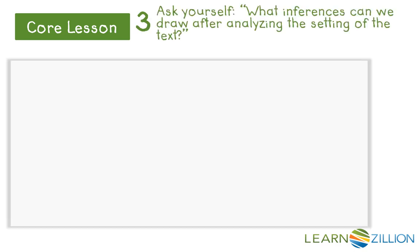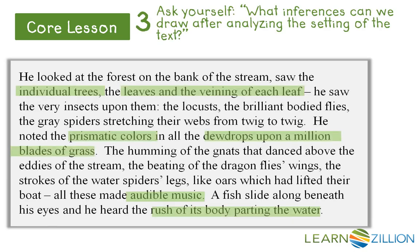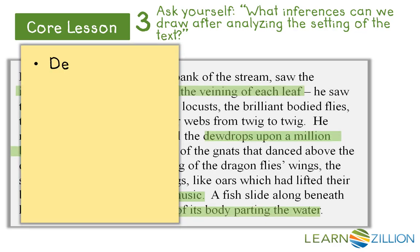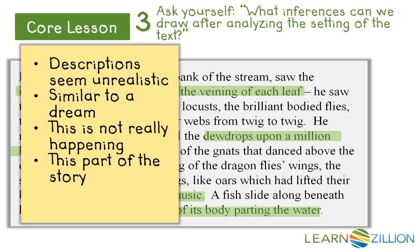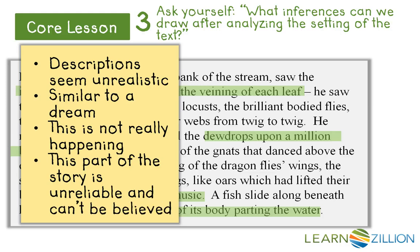When we look at the inferences we can draw from the next part of the text, we come up with some different inferences. Here, we realize that these descriptions seem unrealistic — they're almost similar to a dream. This is not really happening. And the big inference I draw here is that this part of the story is not reliable; it's unreliable and just can't be believed.